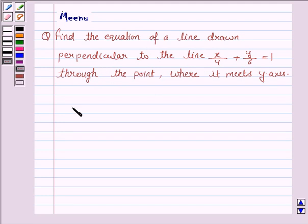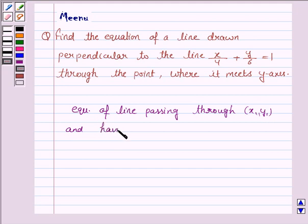For this question, we need to know the equation of a line passing through the point (x₁, y₁) and having slope m. Its equation is given by (y - y₁) = m(x - x₁).